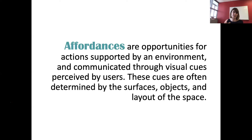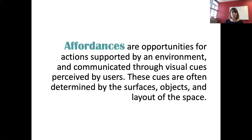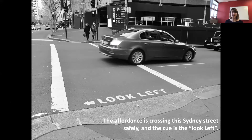These are opportunities for action depending on the material and the person's characteristics. An example of a designed affordance is a 'Look Left' painted on Sydney pavement — the cue tells you which way to safely cross the street; the affordance is crossing safely. Desire lines in Central Park show where an affordance wasn't provided: people wore a path through because the design didn't match what they wanted to do.